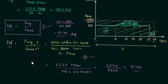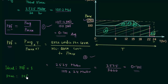Now let us talk about the ideal and practical values of PLF. Ideally, plant load factor must be 1, meaning P average must be the same as P maximum. This is what we want. In this scenario the plant load factor will be 1, but practically plant load factor is always less than 1.